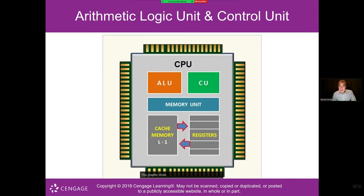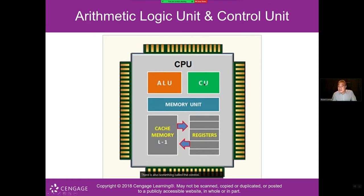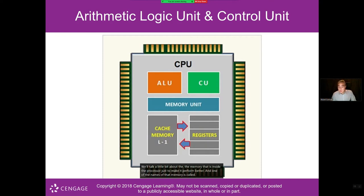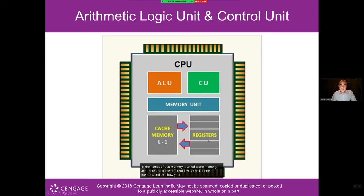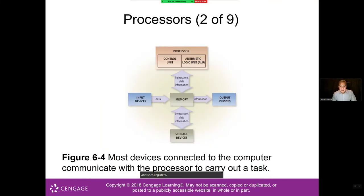This graphic shows the different components within a processor — the arithmetic logic unit, the control unit, cache memory including L1 cache, and registers. When devices are connected to a computer, they communicate with the processor to carry out tasks.